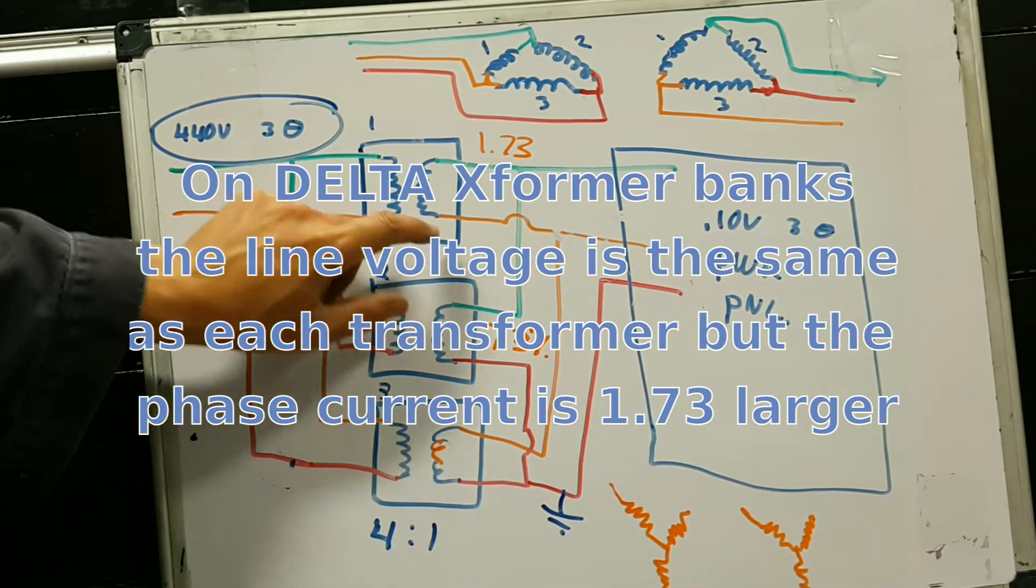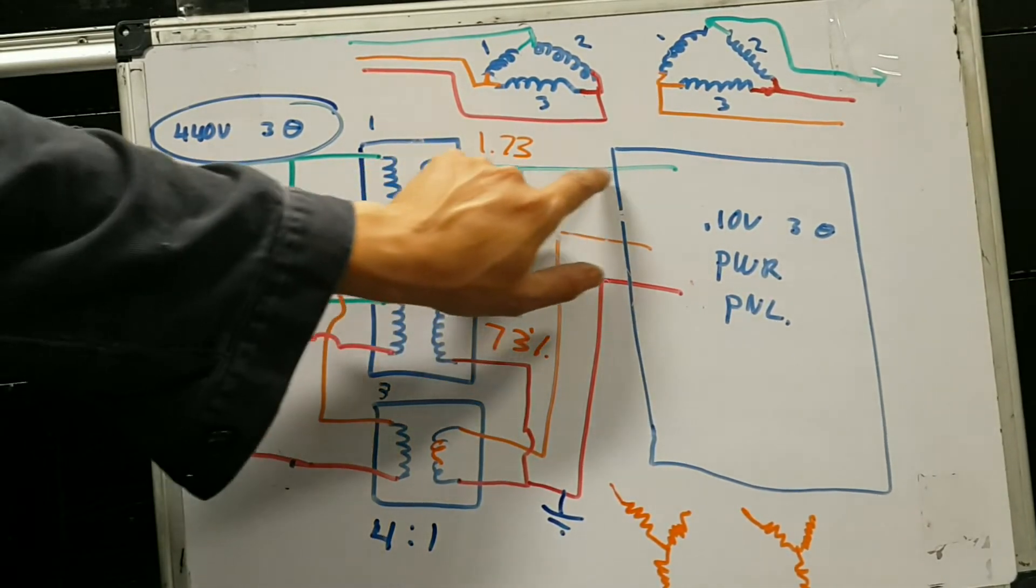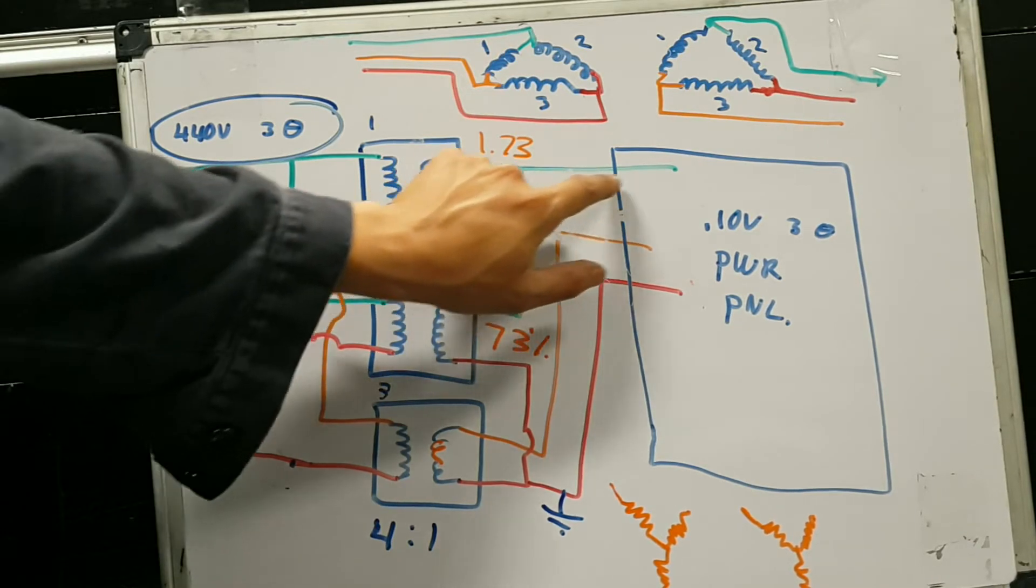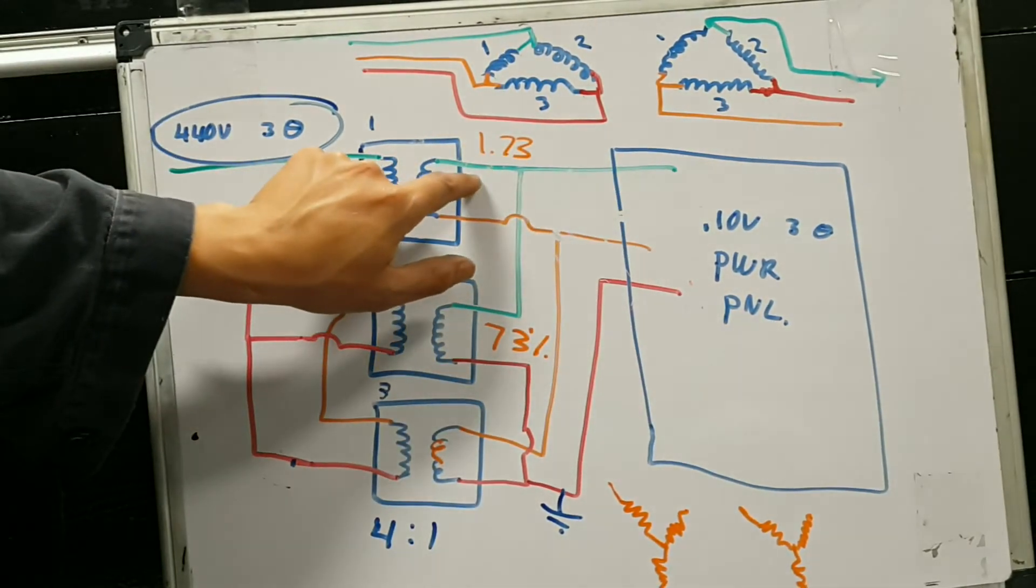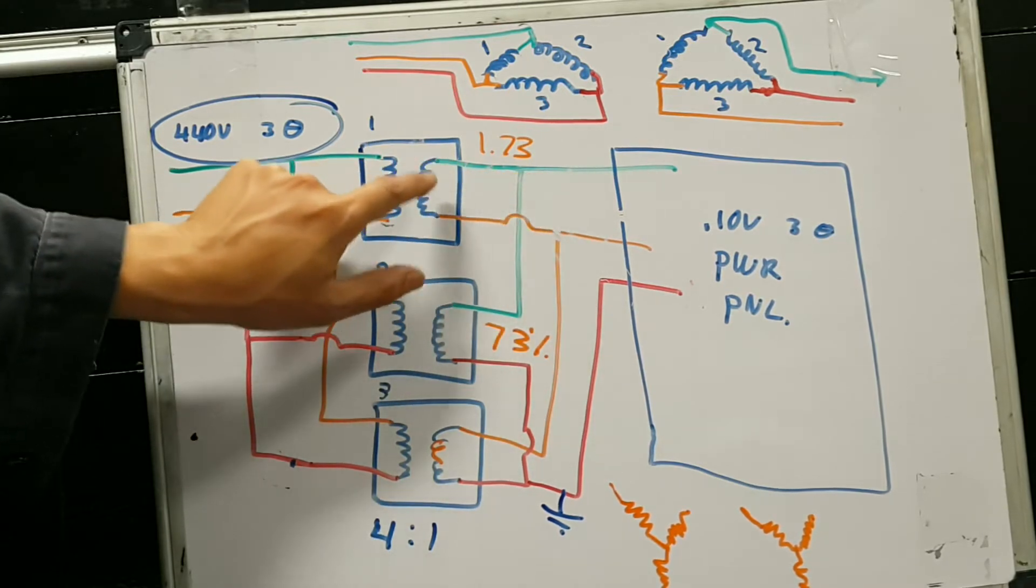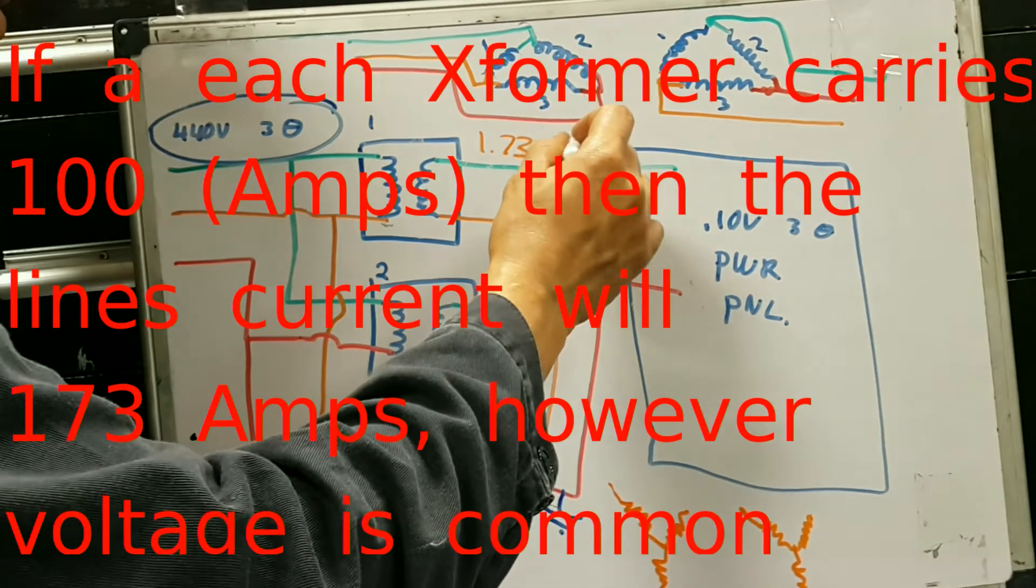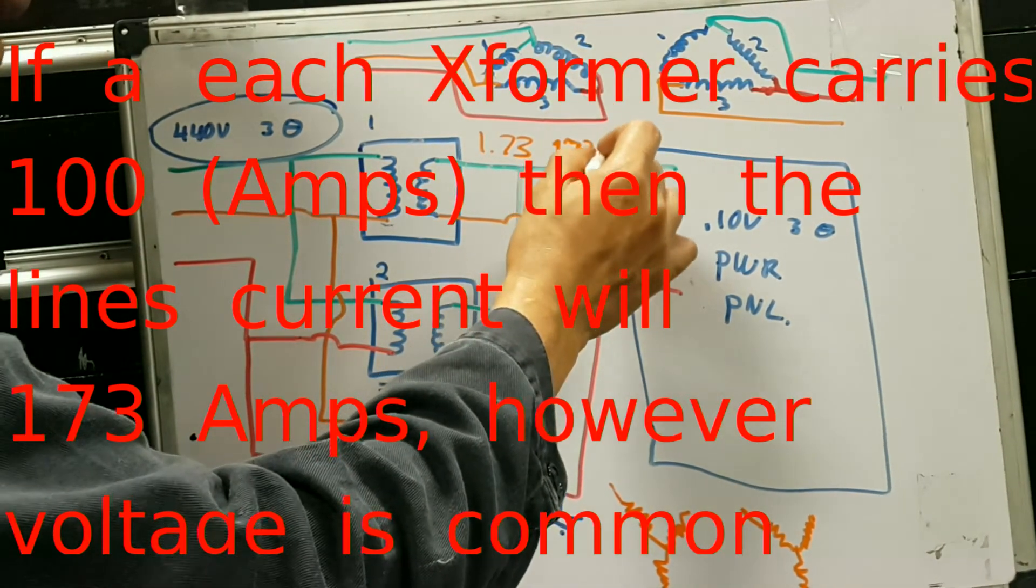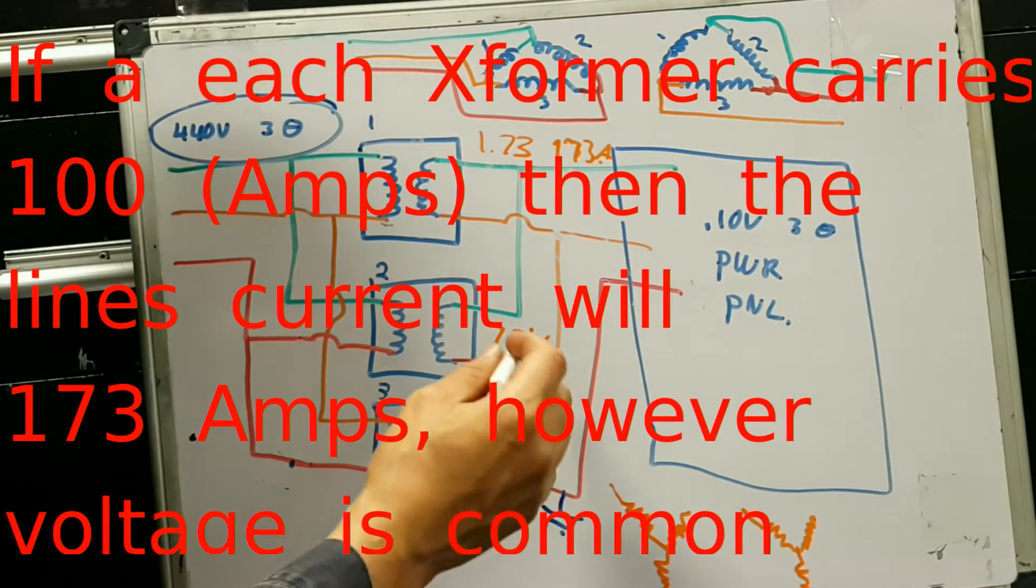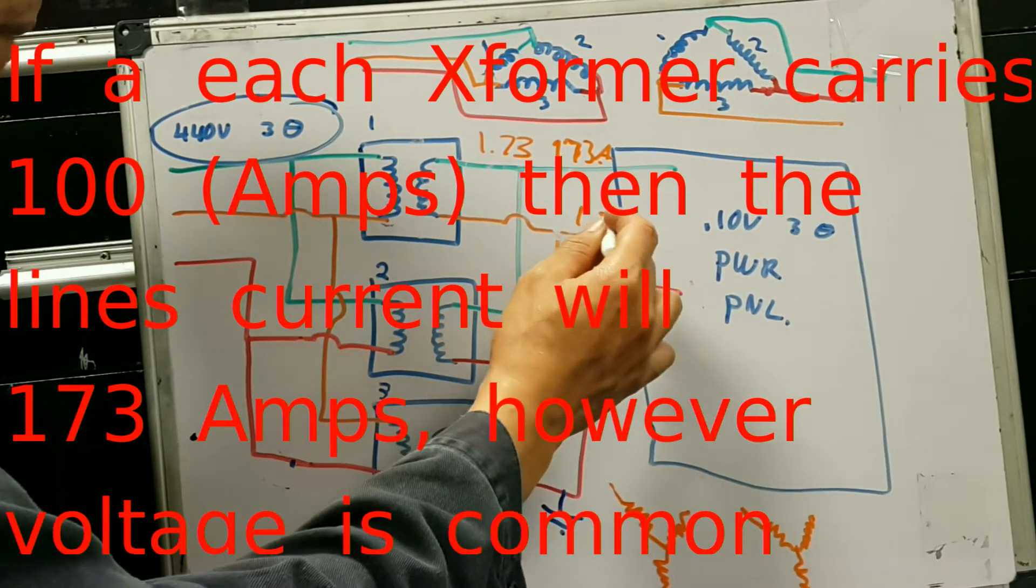Current, if I got a current of 100 amps over here, the actual current going through this line out there is actually 1.73 times the line current, so I'm actually delivering 173 amps going out to the load in all three phases.